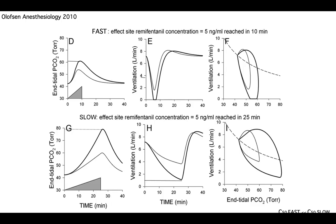If you give the same amount of fentanyl but much more slowly, you see that it goes very slowly, and there is a much smaller effect. This is the big difference between isocapnic experiments — in which you have to correct for CO2 — compared to poikilocapnic experiments.